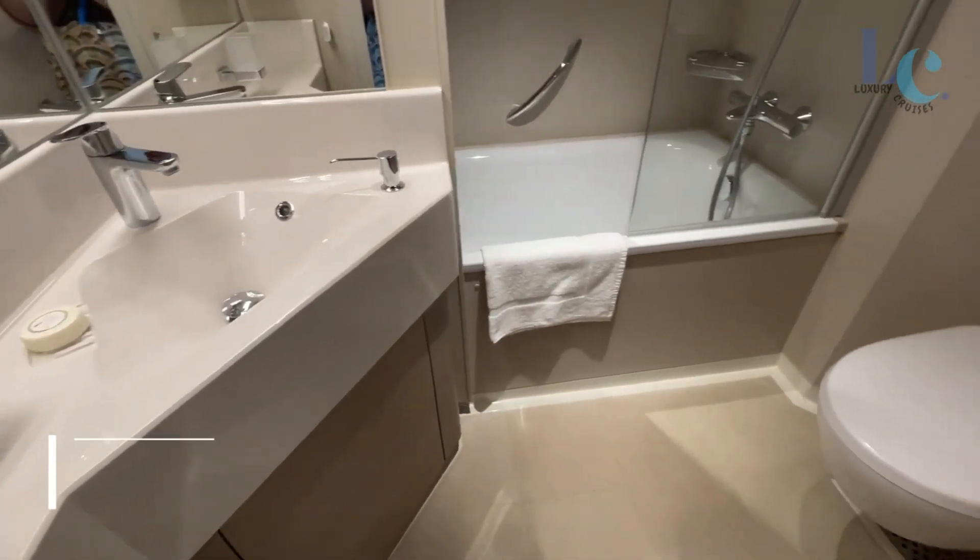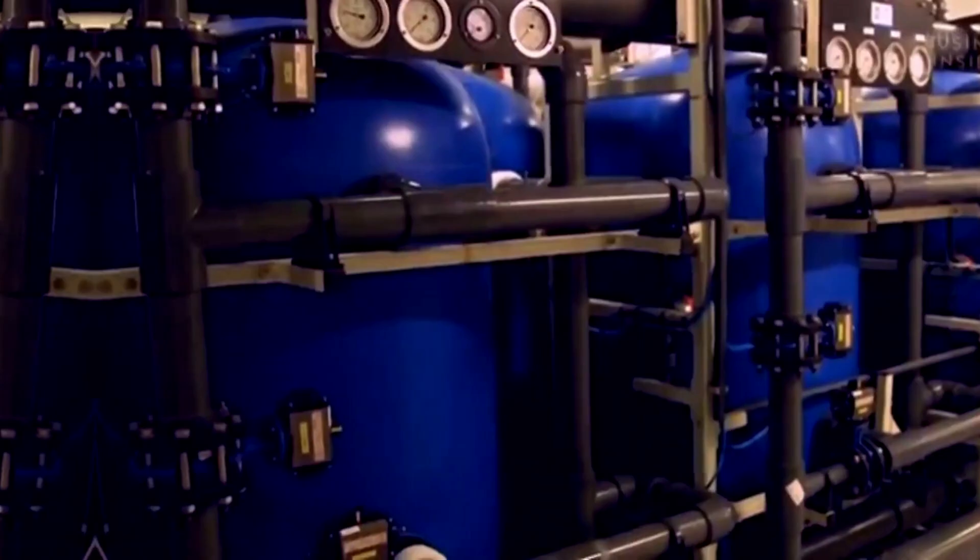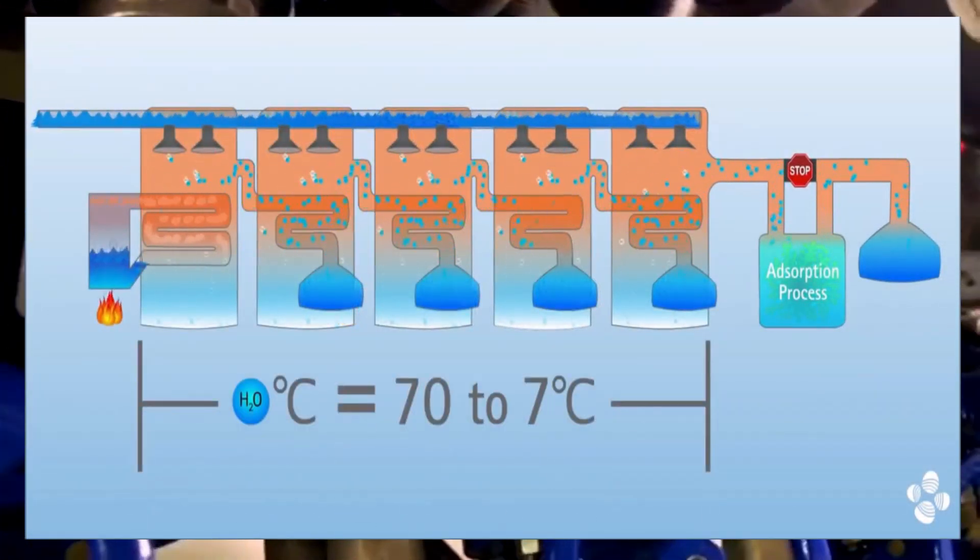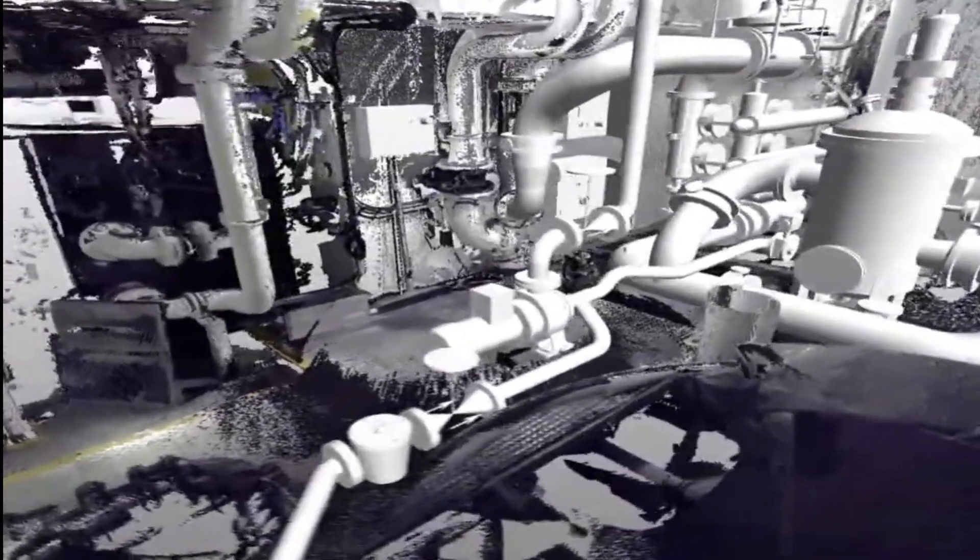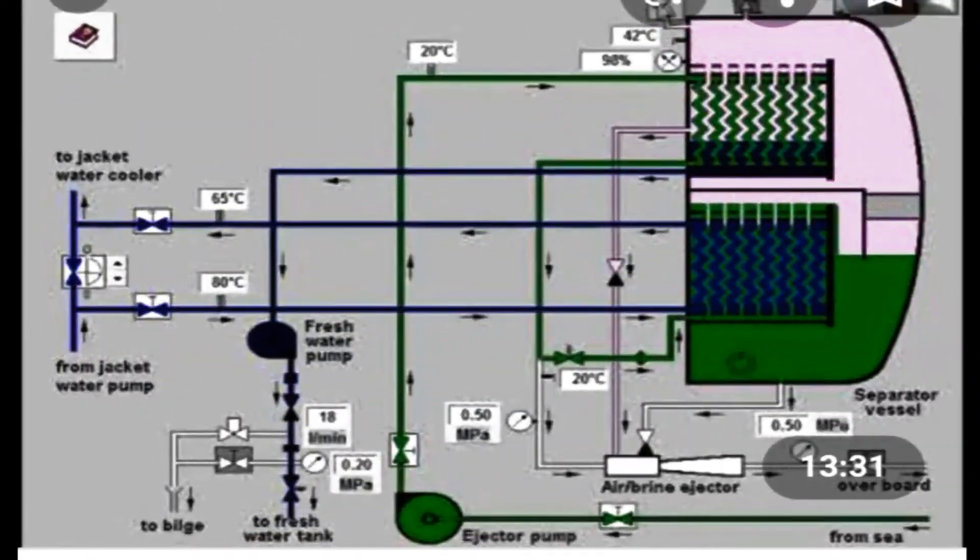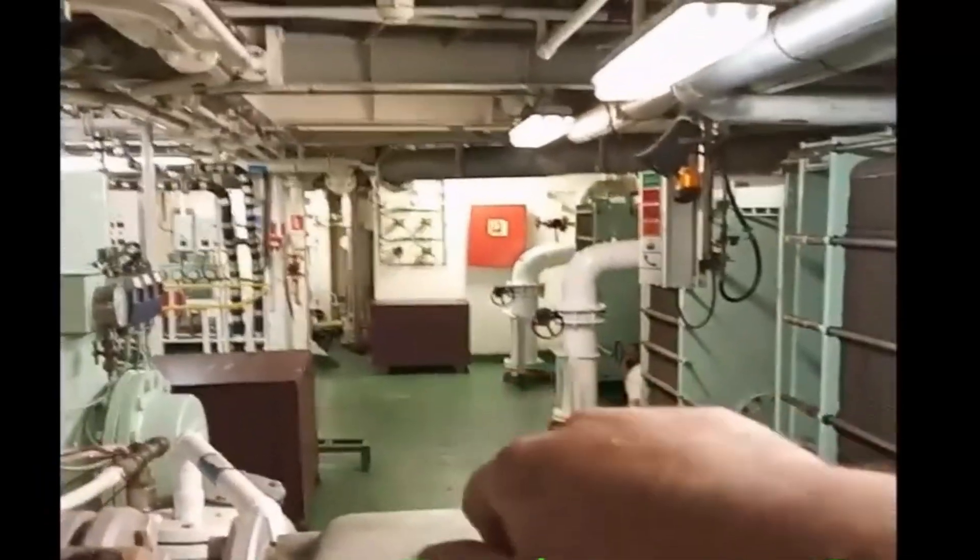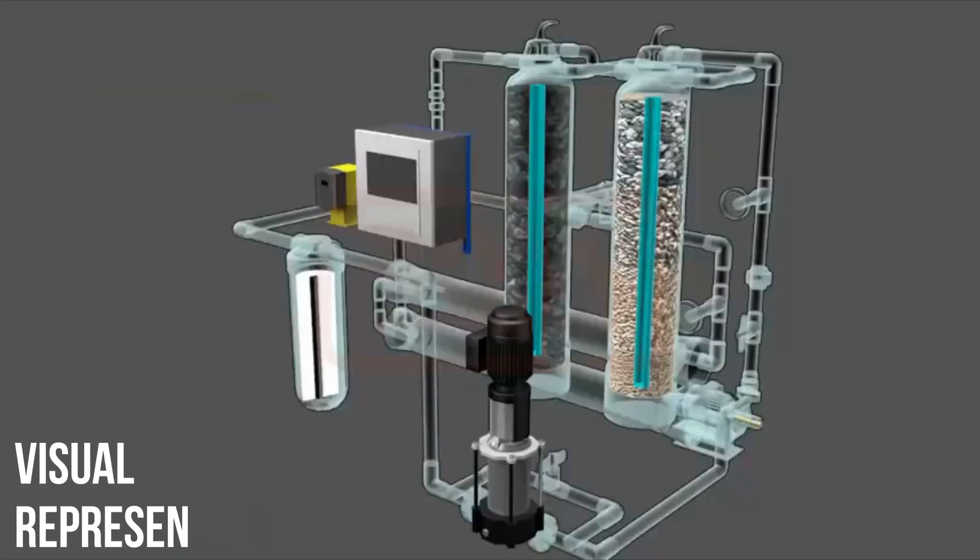Fresh water on cruise ships is mostly generated by desalinating seawater, which is essentially the science of removing the salt from seawater. Cruise ships use sophisticated machines known as reverse osmosis desalination units to perform this task. Think of it like a super efficient filter that pushes seawater through special membranes.